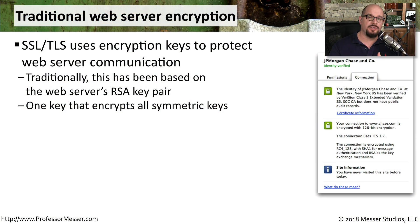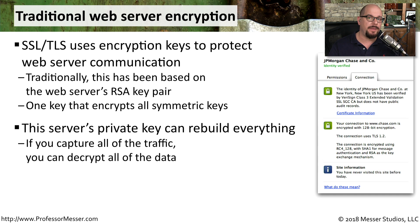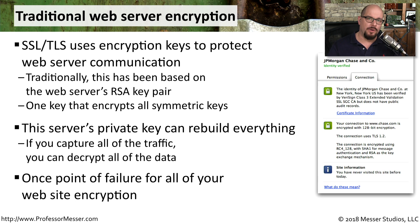When our browser is communicating to a web server over an encrypted channel, it's using SSL, or what is now technically TLS, to encrypt the data between the server and the client. This has traditionally been based on a private key stored on the web server — one private key used to encrypt the symmetric keys transferred between server and client. That means if you have a copy of that private key and have captured all the network data, you can effectively rebuild all conversations and view everything in decrypted form. This is a single point of failure for all the encryption occurring between your web server and your clients.